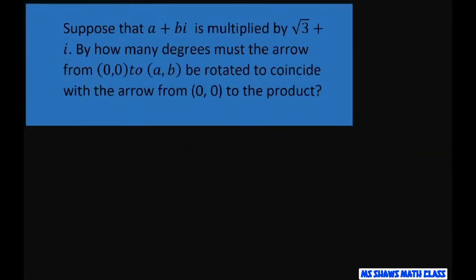And let's do the same thing for the next one. We get r equals the absolute value of square root of 3 plus i, which equals the square root of square root of 3 squared plus 1 squared, which equals 2.